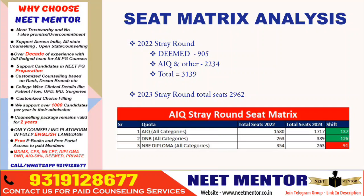In 2022, there were 3139 seats, and this year there are 2962 seats — a difference of only about 150 to 200 fewer seats. This is after revising and reducing the qualifying cutoff to zero percentile, meaning everyone is eligible, and still this many seats are left out.